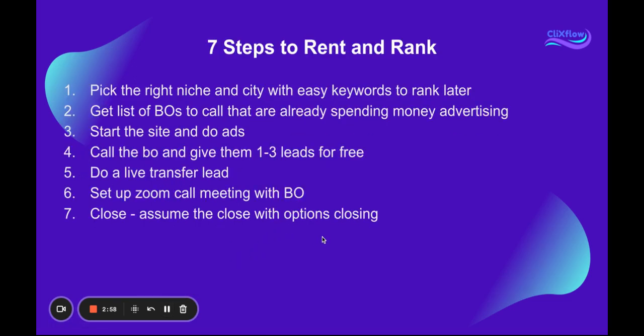Here are the seven steps to Rent and Rank. It's super simple — not complicated. Step number one: pick the right niche, city, with easy keywords so that you can rank it later. Number two: get a list of business owners to call who are already spending money on advertising, so you can pitch them on your website. Number three: start the site and start doing ads — we'll go over Google ads and all that in detail.